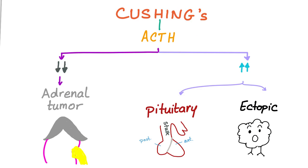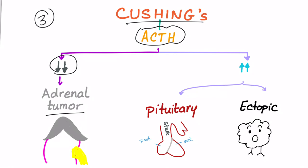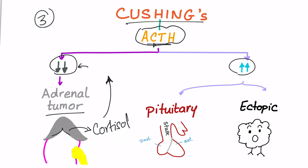Step three: measure the ACTH level in the blood. If it is low, that means it is an adrenal tumor — it can be benign or malignant, but usually it is a benign adenoma. Think about it: if the adrenal gland is making excess cortisol, the ACTH will be low because that cortisol will suppress ACTH secretion from the pituitary.